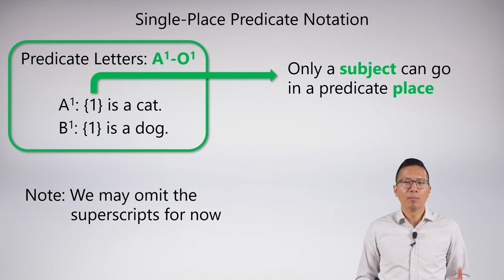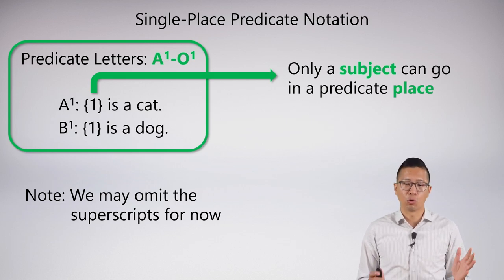For convenience, and just so it looks a little bit smoother, because we're only doing single-place predicates in this unit, I'm just going to drop those superscripts for now, just so it's a little cleaner looking. This doesn't really matter. If you want to have your superscripts in your abbreviation schemes, you're more than welcome to.